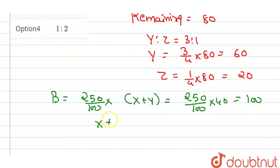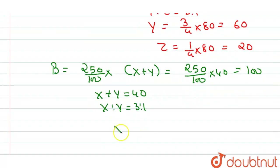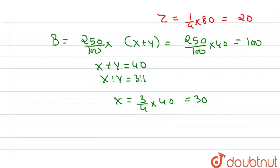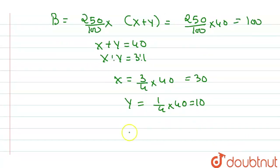इसमें से X plus Y हमें given है 40। X is to Y का ratio हमें given है 3:1। तो X कितने हो जाएंगे हमारे? X होंगे हमारे 3 by 4 into 40, that is 30 के equal। And Y होंगे हमारे 1 divided by 4 into 40, that is 10 के equal। Z आएगा हमारा 100 minus 40 के equal, that is 60 के equal।